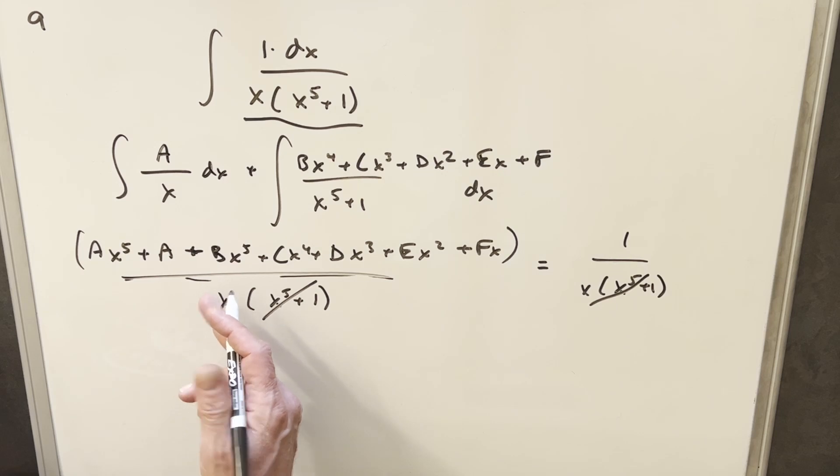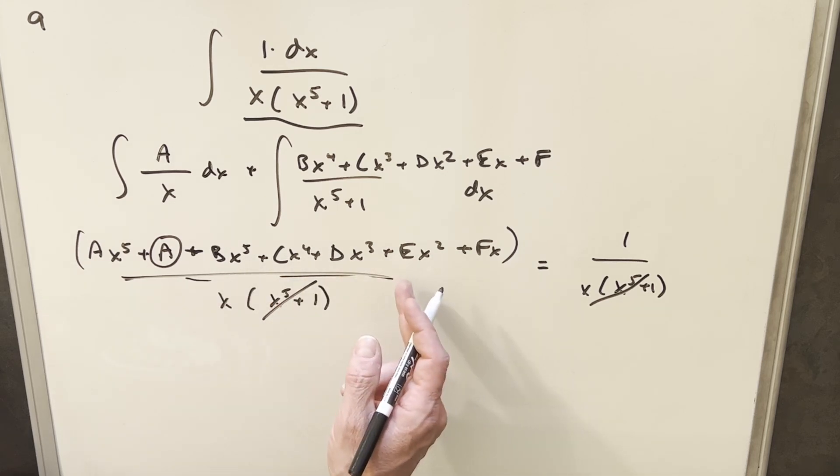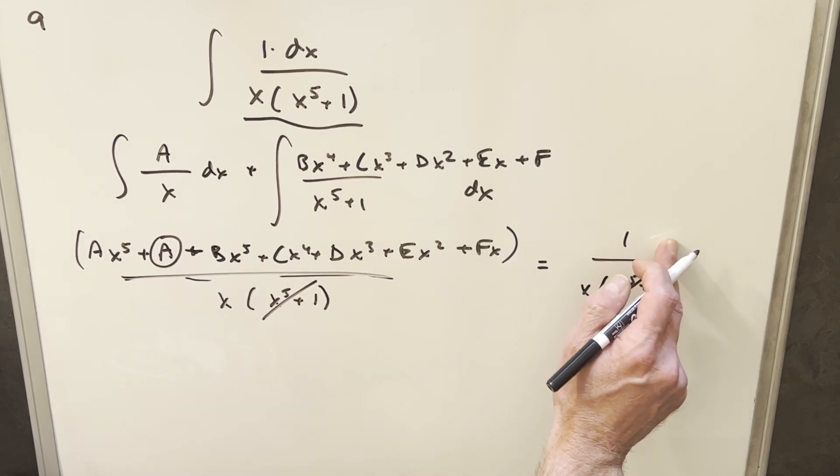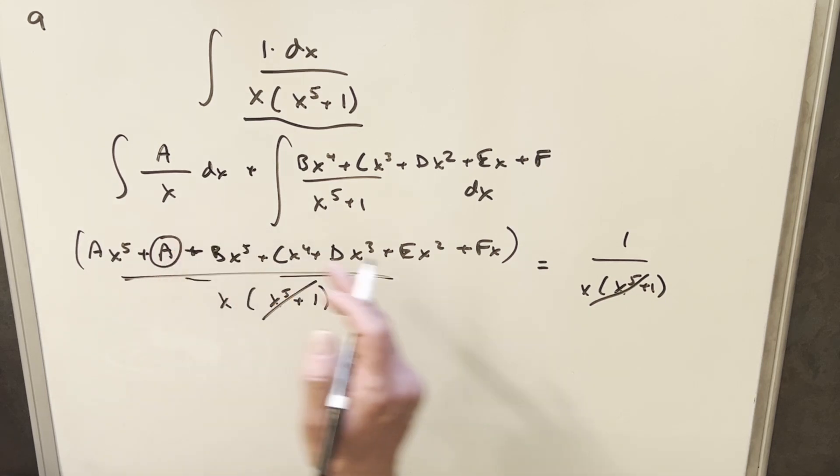Then for the next step, what we do is we look at it by the degree. So we only have one constant term here, A. So all these x terms have to be zero, because we have no x over here. We only have this one constant term, A. So we can equate this a directly to one, and we can say our A value equals one.